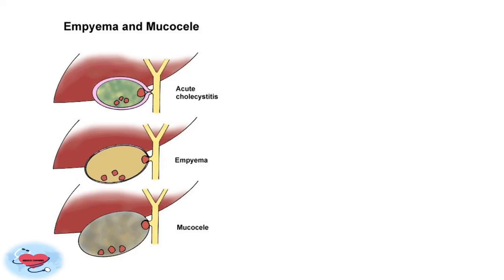Empyema of the gallbladder is a type of cholecystitis where pus — which may be sterile or non-sterile — is present. It is a very tender condition. A smooth, globular, palpable gallbladder is found in the right hypochondrium. Patients present with fever, toxicity, pain, and tenderness. This condition has high mortality and complications including rupture, peritonitis, and septicemia.